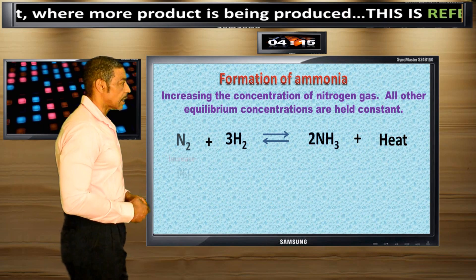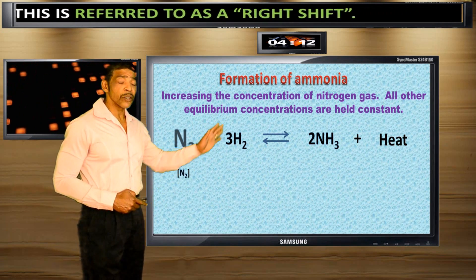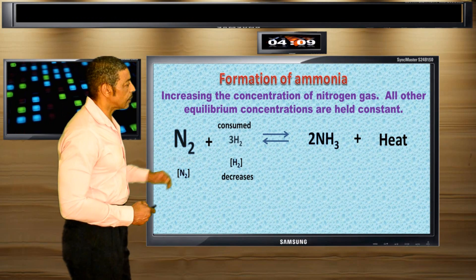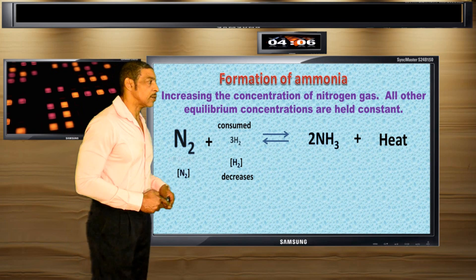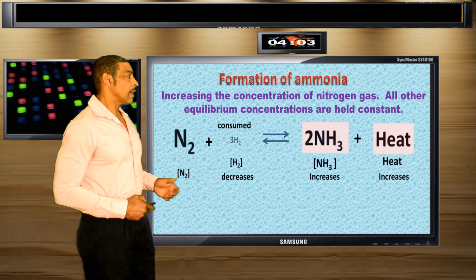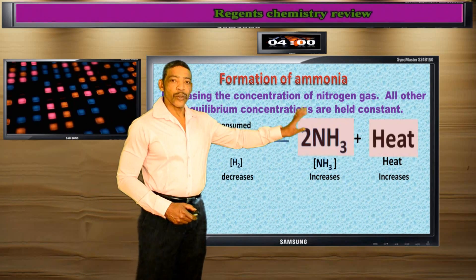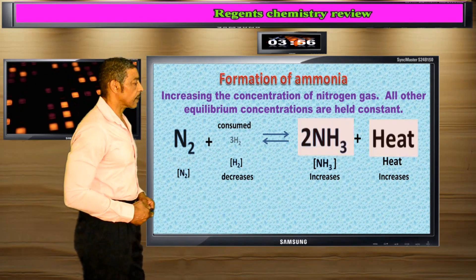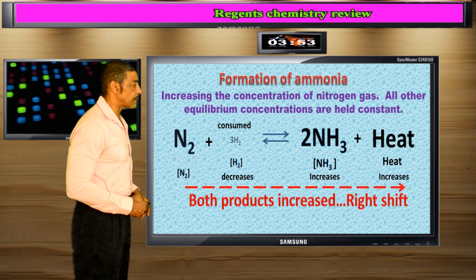Increasing the concentration of N2 only while holding all other concentrations constant. Increasing the concentration of N2 will consume H2, causing its concentration to decrease. This will cause the products to increase in amount, including the heat energy. This is called a right shift.